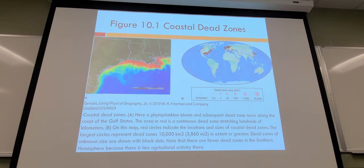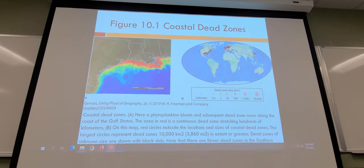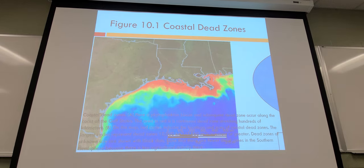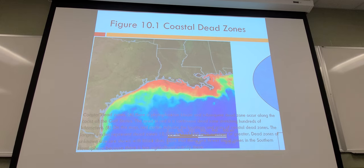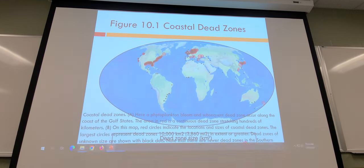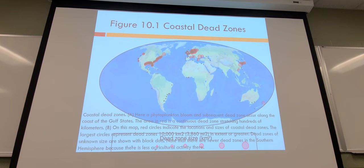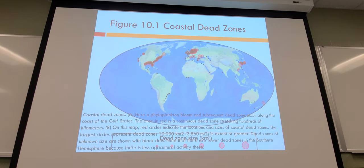A map from the book shows the dead zones — notably where the Mississippi River runs out, you can imagine how many farms are washing runoff into the Mississippi and the cumulative effect that has on creating dead zones.